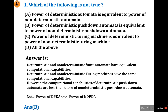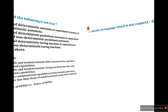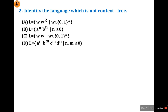Finite automata — deterministic and non-deterministic — are the same. Turing machines — deterministic and non-deterministic — also have the same computational capacities. Only pushdown automata differ: deterministic pushdown automata have less computational capacity than non-deterministic pushdown automata. So the answer to question one is B: the power of deterministic pushdown automata is NOT equivalent to non-deterministic pushdown automata.